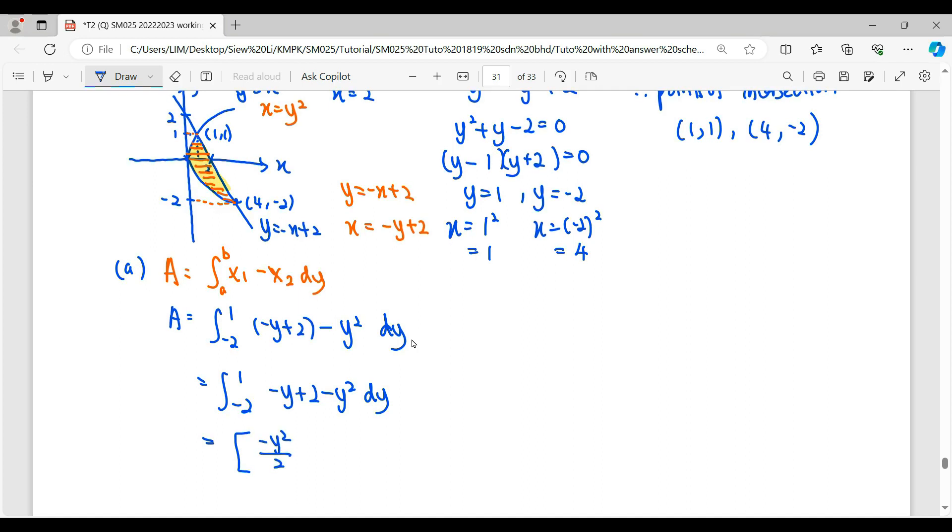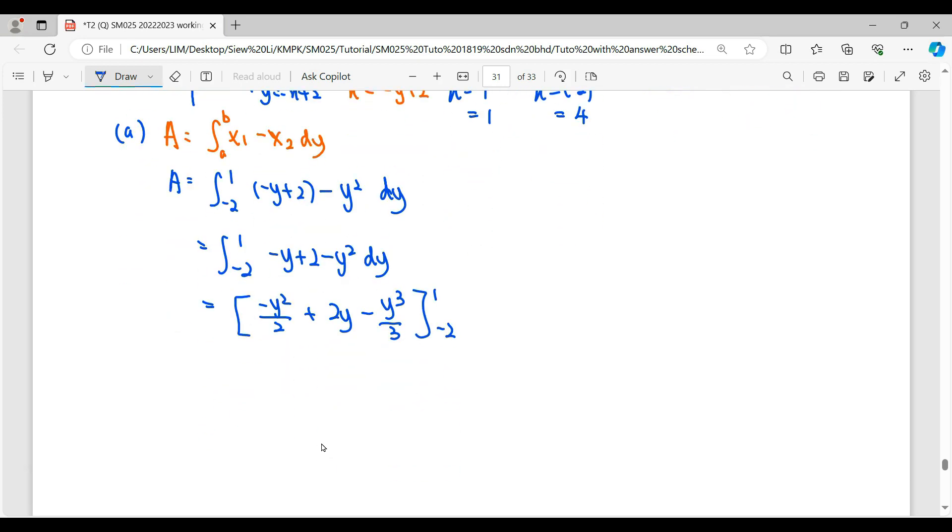Power plus 1 over new power. Integrate constant, we get linear to y. Then integrate y², power plus 1 over new power. Substitute our upper limit minus lower limit, which is 1 minus -2. Make sure you write your working clearly. And the rest of it, you can press calculator. So area answer we put in unit square.